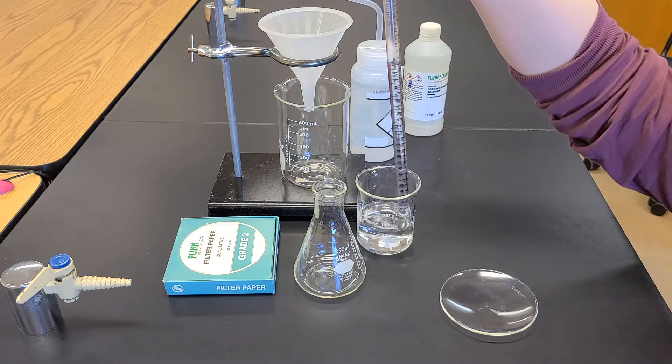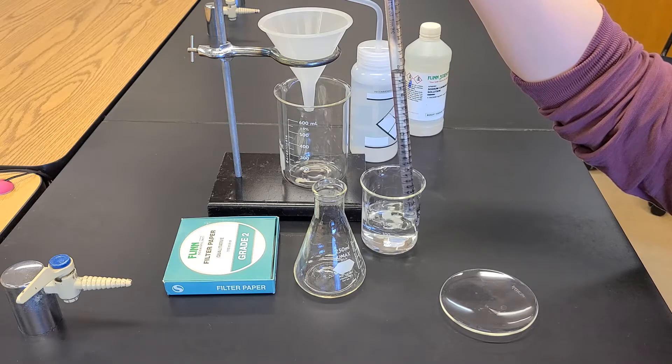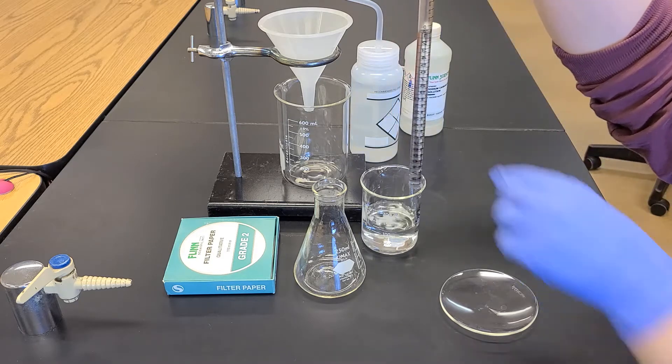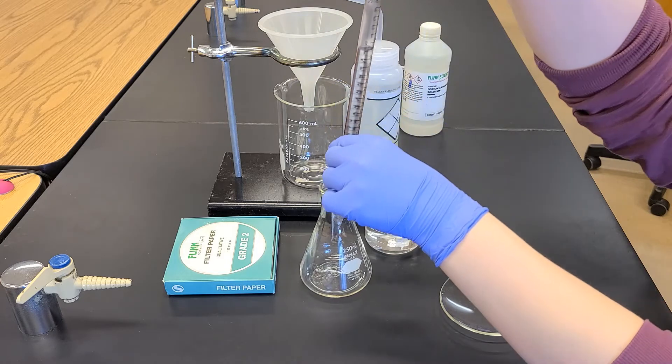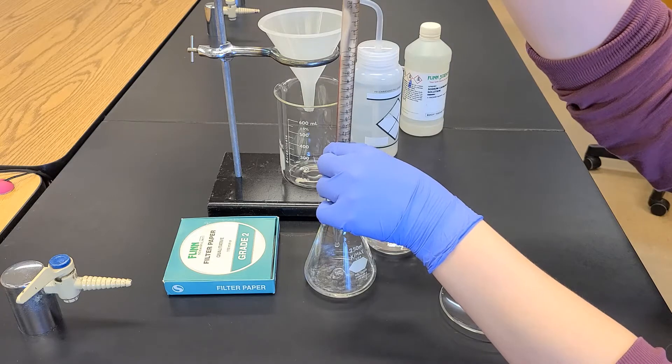I'm going to draw up the volume that I need. In this case, 50 milliliters. I'm looking at eye level to make sure that my meniscus is properly resting on the mark, and then I'm going to transfer all of that solution into my reaction flask.